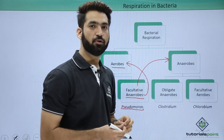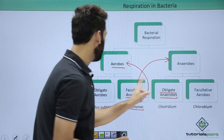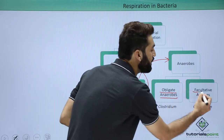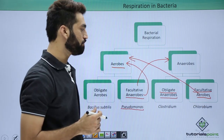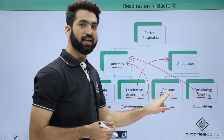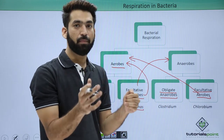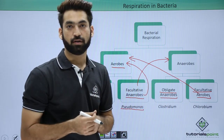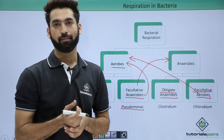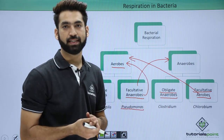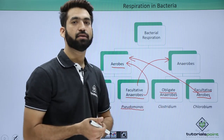When we talk about anaerobes, they include obligate anaerobes and facultative aerobes. Obligate anaerobes are strictly dependent on the absence of oxygen. When oxygen is present, it becomes a deadly poison for them and the bacteria will die in the presence of oxygen. Clostridium is one example of an obligate anaerobe.